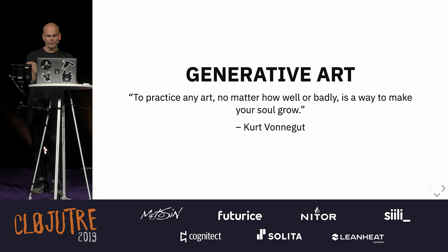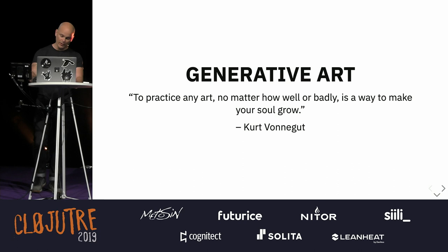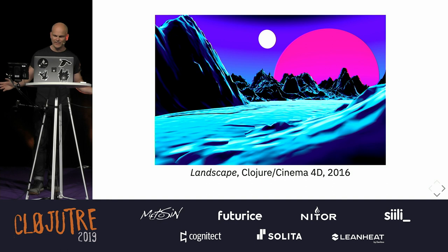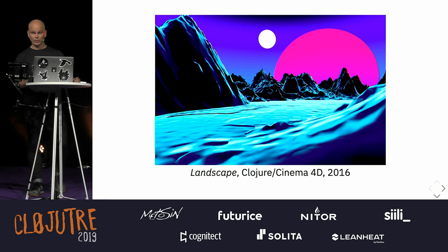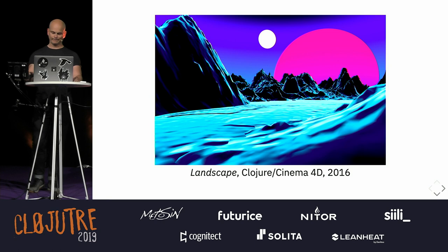We're going to do this mainly in the context of generative art, and I'm going to show you now a small subset of the literally thousands of artworks that I've made over the last few years. We'll start with this one — an alien landscape. I created all of the geometries using Clojure, and then exported them to Cinema 4D for rendering. This was inspired very much by the covers of science fiction novels that I used to read as a boy in the 70s and early 80s.